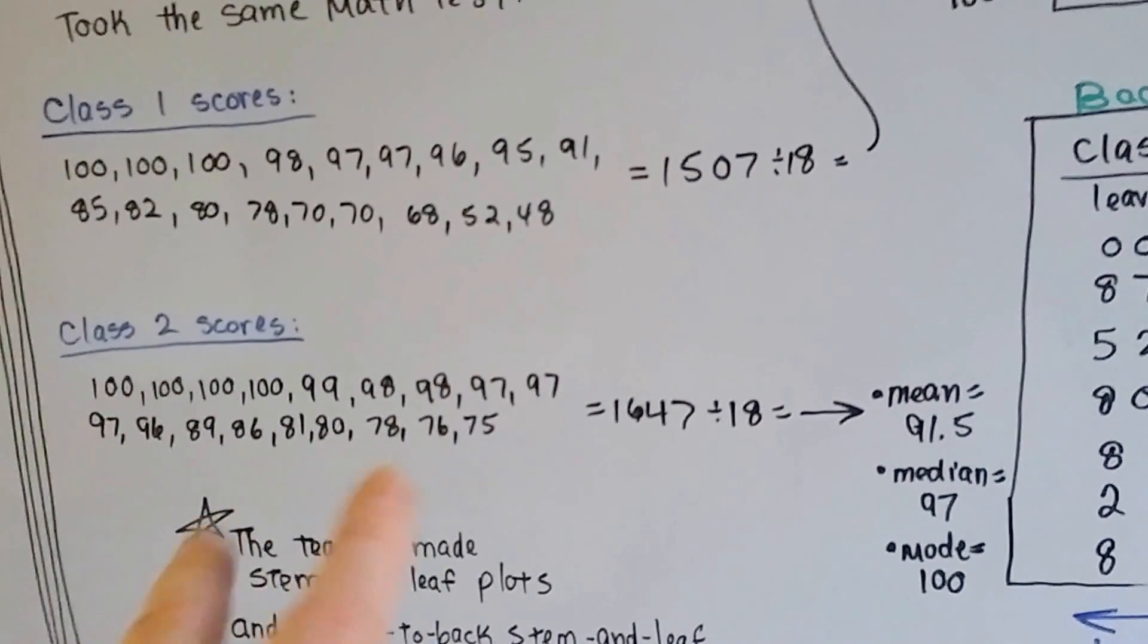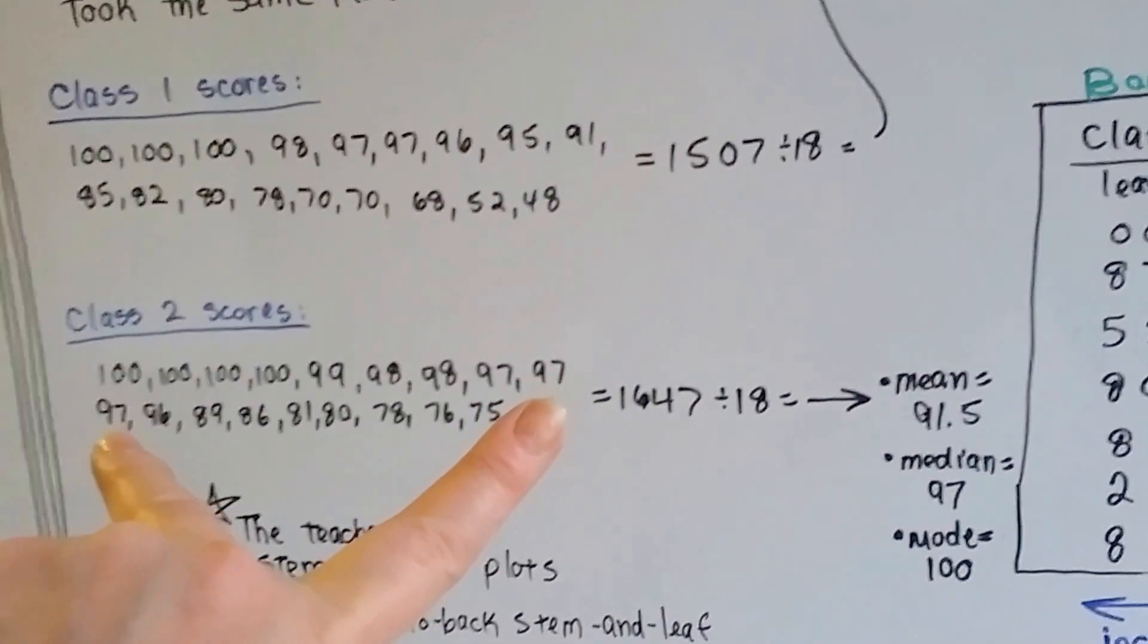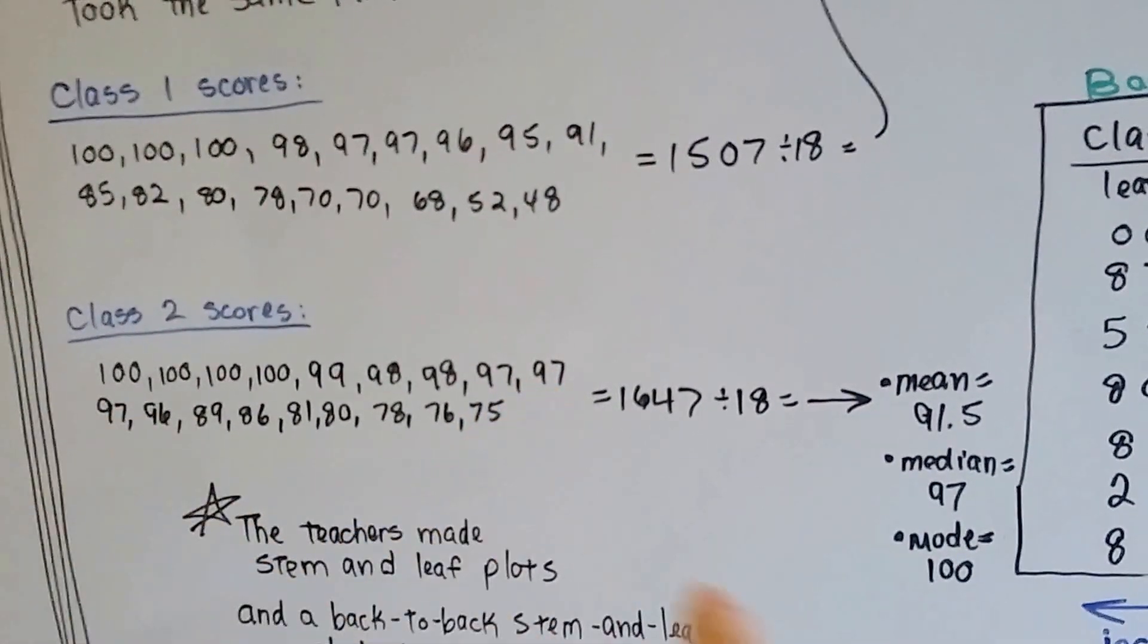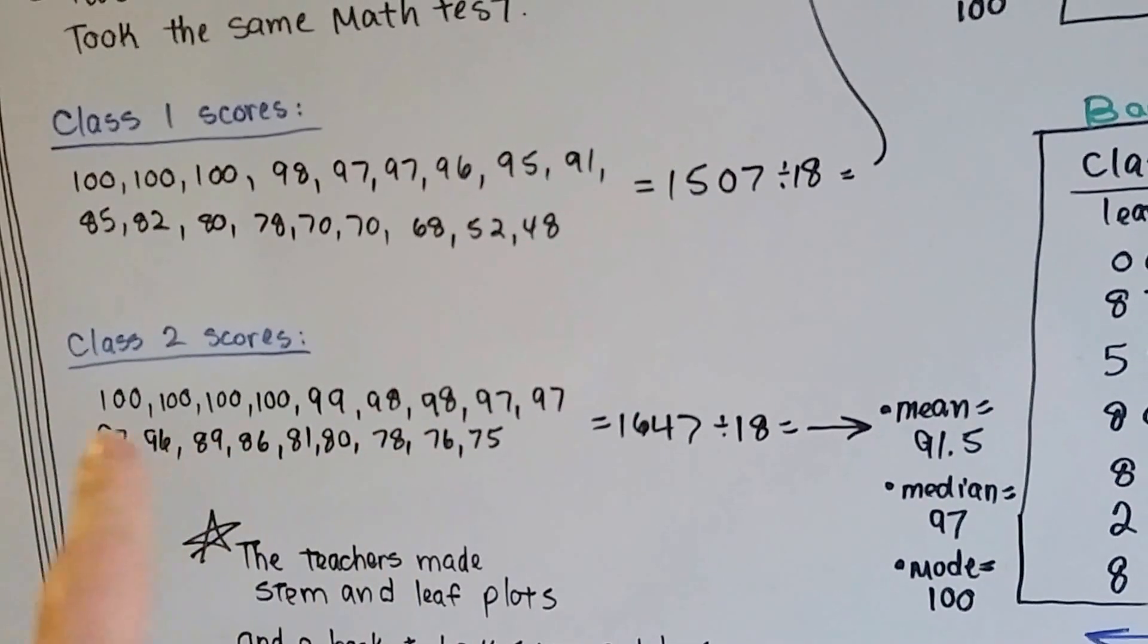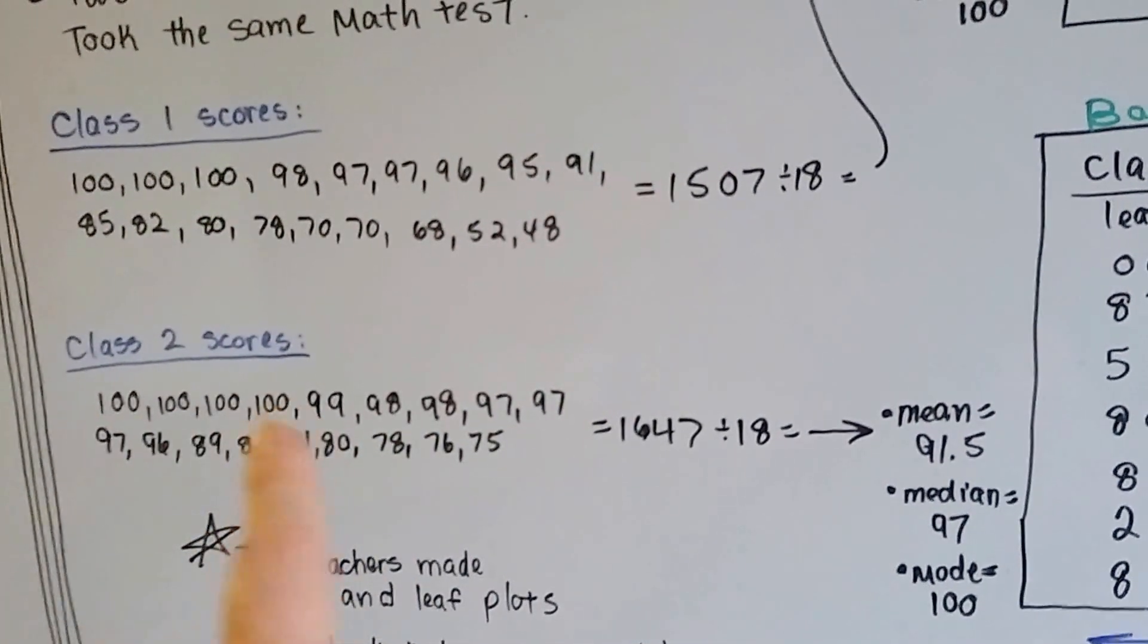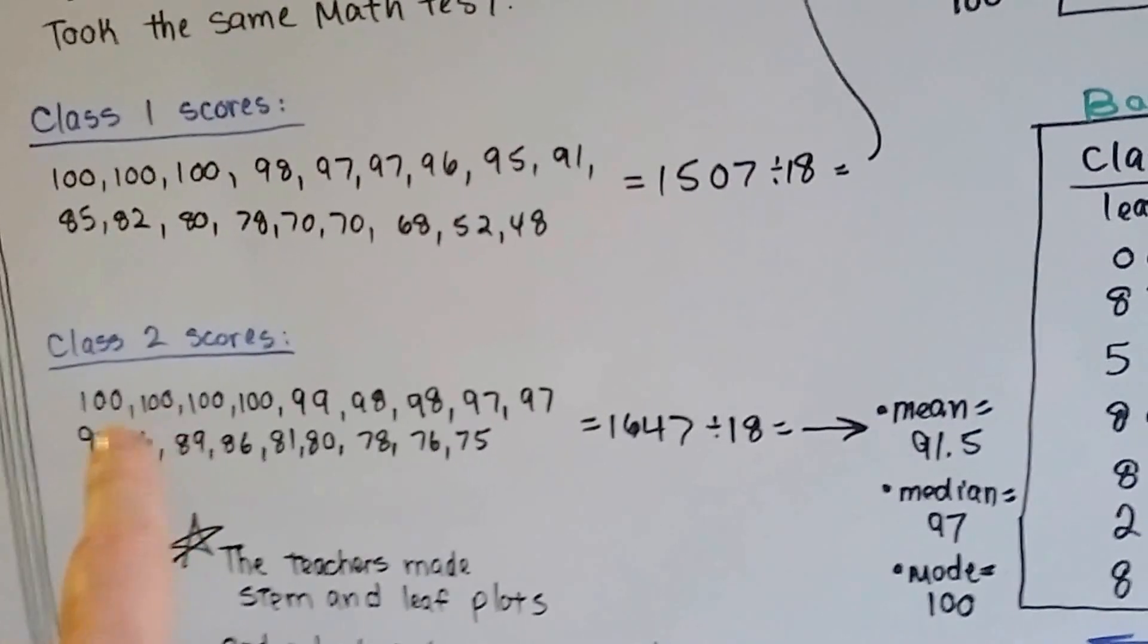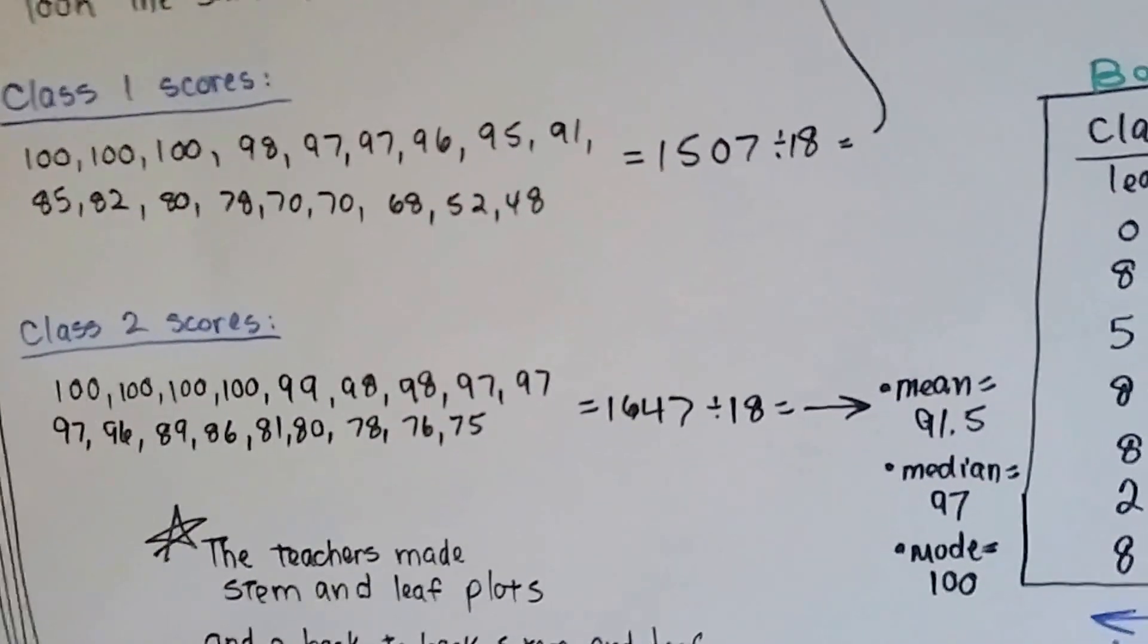The median is the middle number again, and it's 97. The mode is the number that appears most often, and that is 100. There were three that got 97, but there's four that got 100, so the mode is 100.